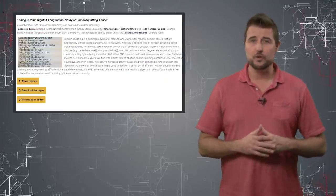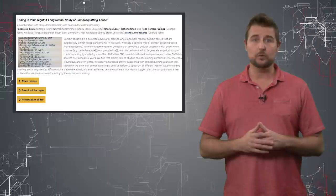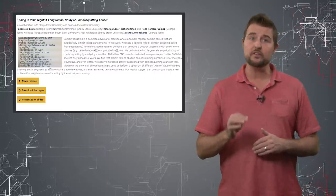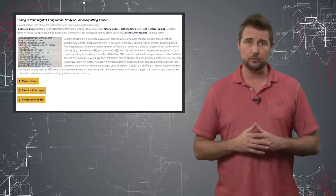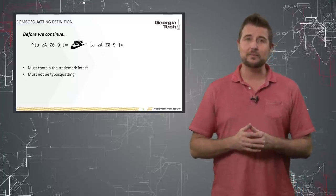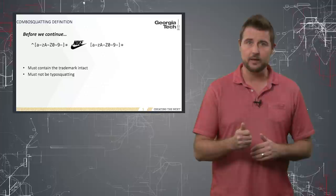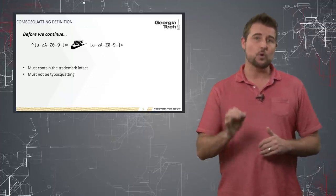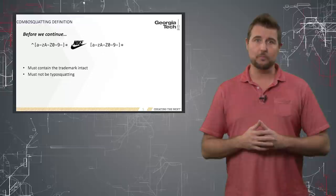Tomorrow, researchers from Georgia Tech and Stony Brook University will release research on another technique that they call combo squatting. This is where malicious actors register domain names that have a trademark in them, a familiar name, but add additional words to that particular domain.